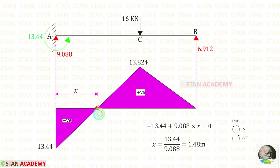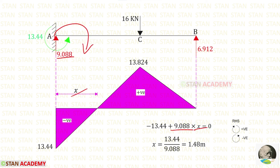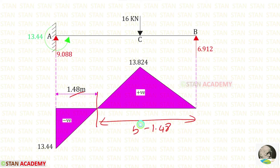Here you can see the bending moment diagram. At a certain point the bending moment becomes zero — let us make a section at this point and find the value of x. Using the right-hand side rule, the moment MA acts anticlockwise (negative) and the vertical reaction RA acts clockwise at distance x (positive). Finally, for x we get 1.48 meters. The point of contraflexure from the right side is 5 - 1.48 = 3.52 meters.